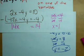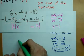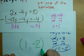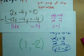So, the coordinate where these two lines intersect is 1, negative 2. See? x, y. x, y.